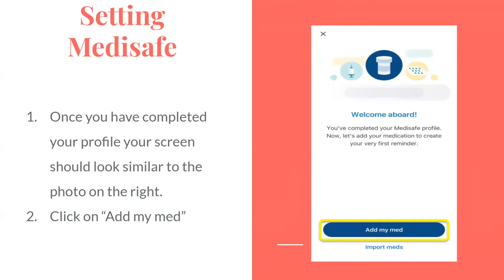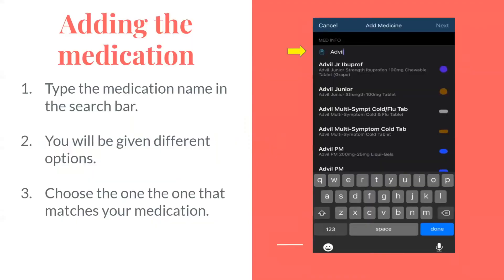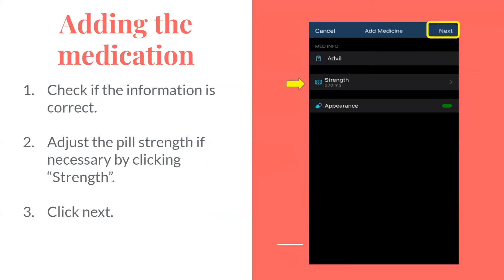Once you have completed your profile, your screen should look similar to the photo on the right. Click on Add My Need. Add in the medication by typing the medication name in the search bar — you will be given different options. Choose the one that matches your medication. Check if the information is correct, and adjust the pill strength if necessary by clicking Strength. Then click Next.